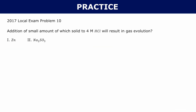Let's do one more problem, very similar to what we just did: addition of a small amount of which solid to 4 molar hydrochloric acid will result in gas evolution? First, let's try zinc — we just did this. Zinc reacting with hydrochloric acid: zinc has a charge of 2+, pairs up with chloride to form ZnCl₂, and hydrogen is left over. Hydrogen must be in its diatomic form H₂, which is a gas. So this will result in a gas evolution.